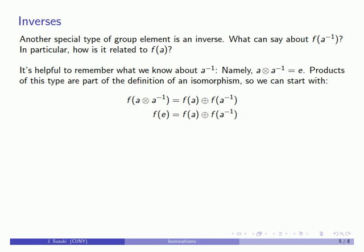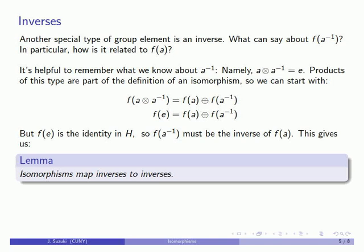On the right hand side, I have the product of two things equals the identity, which means that F of A inverse must be the inverse of F of A. And so this gives us a second useful result.